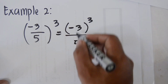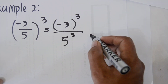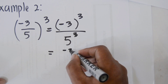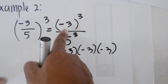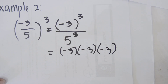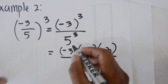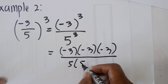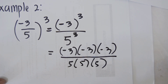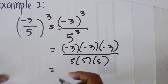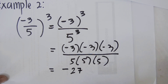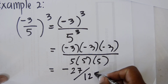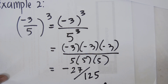We can simplify this expression. That is equal to negative 3 times negative 3 times negative 3 — we multiply negative 3 three times because of the exponent 3. In the denominator, 5 times 5 times 5. Negative 3 times negative 3 times negative 3 equals negative 27, and 5 times 5 times 5 equals 125. So the result is negative 27 over 125.